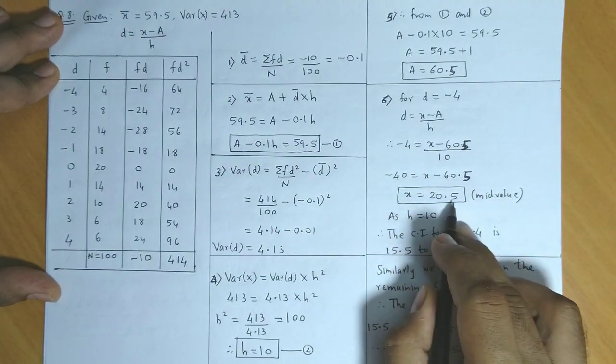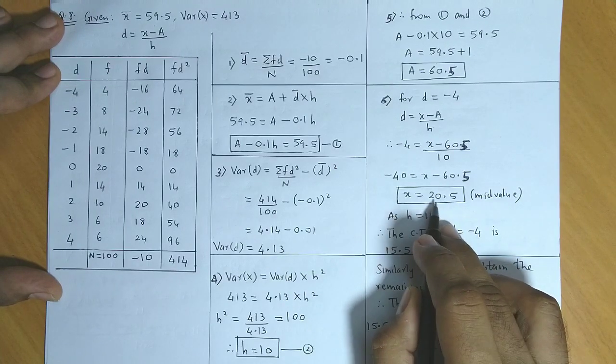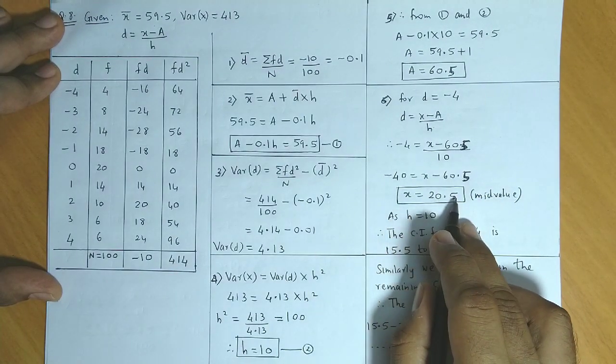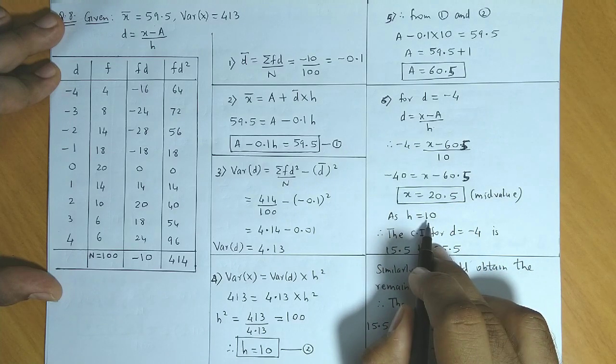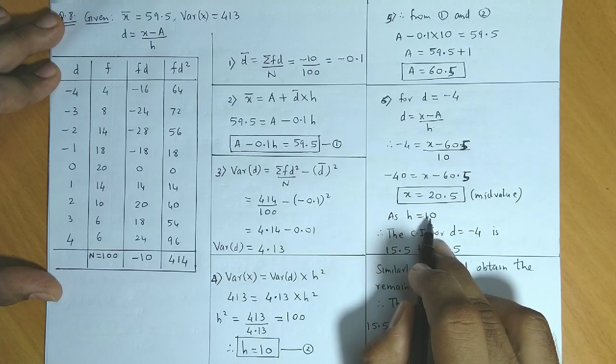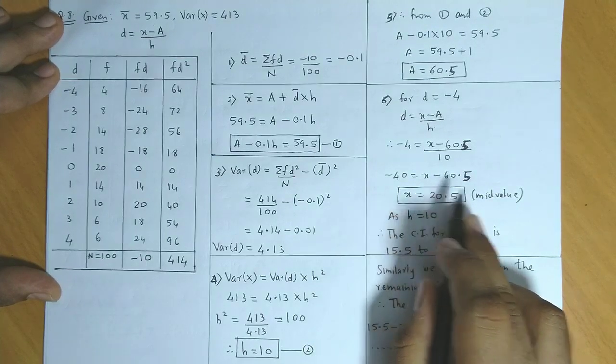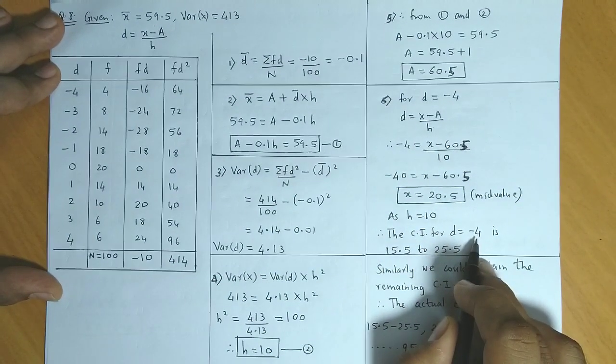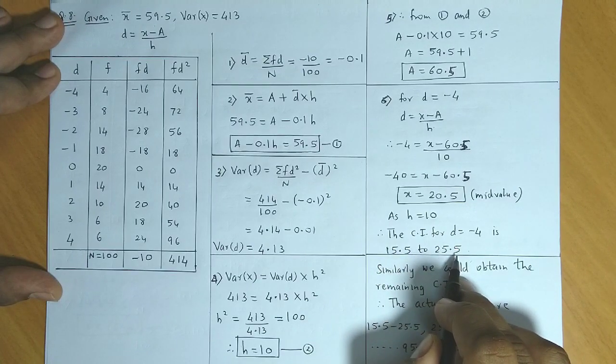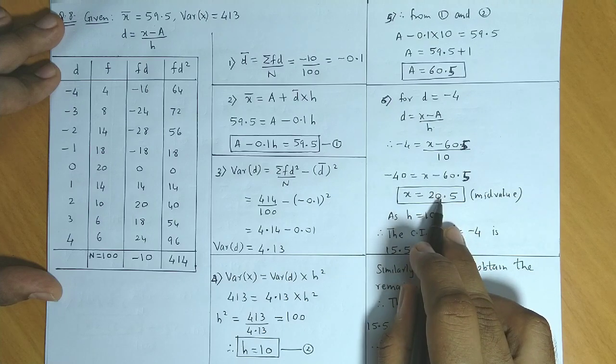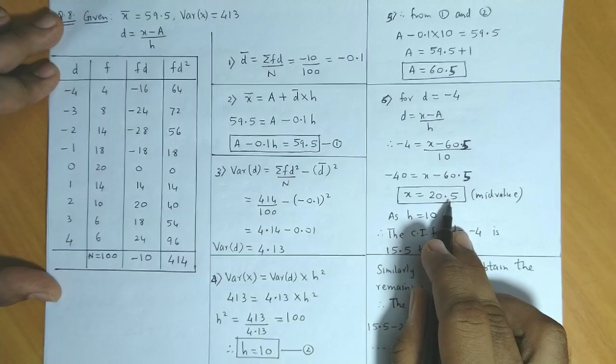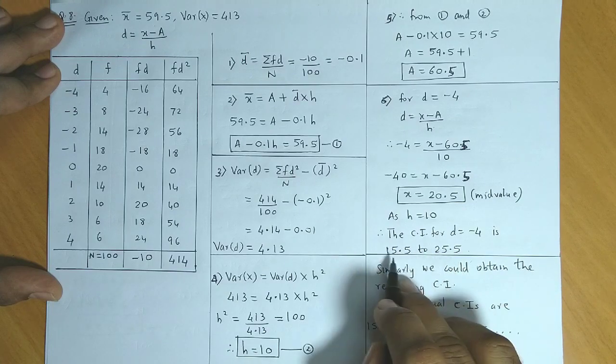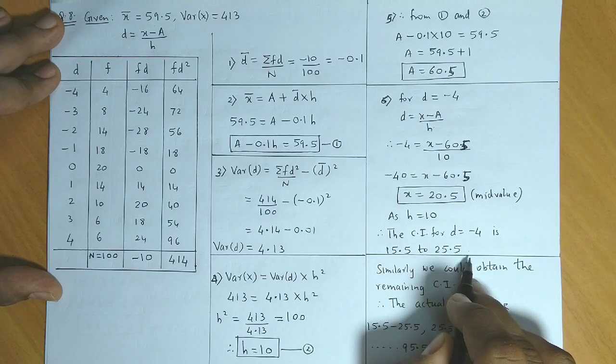So x is the first class interval's mid value. The mid value is 20.5 and the class height is 10. If the mid value is 20.5 and class height is 10, then to obtain the first class interval, take half the value (that is 5), subtract it to get the lower limit, and add 5 to get the upper limit. So the first class interval for d equals minus 4 is 15.5 to 25.5.